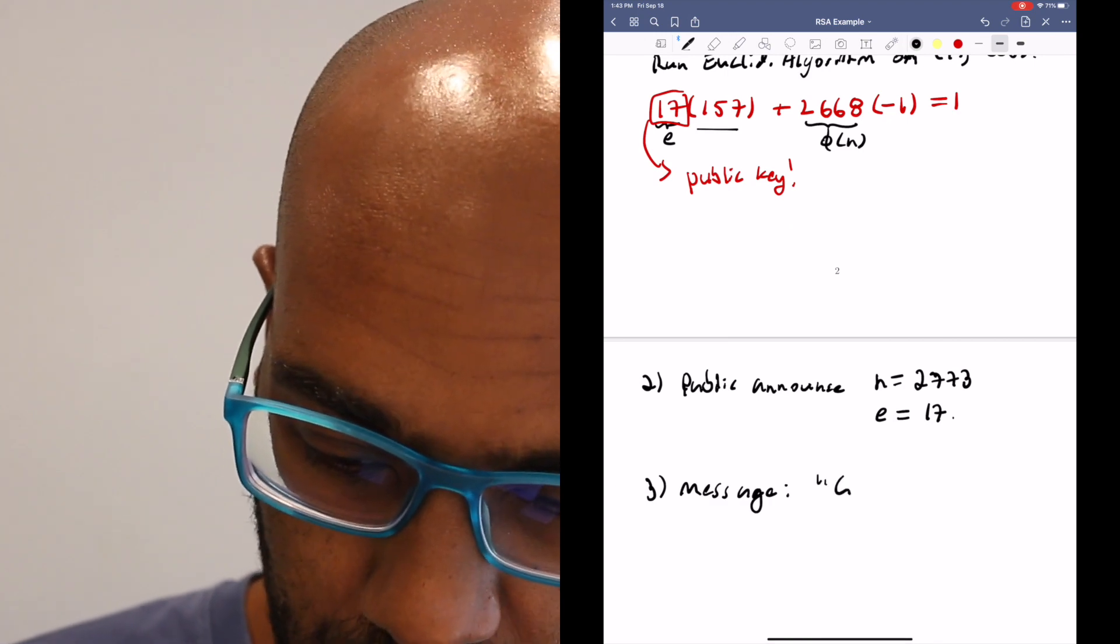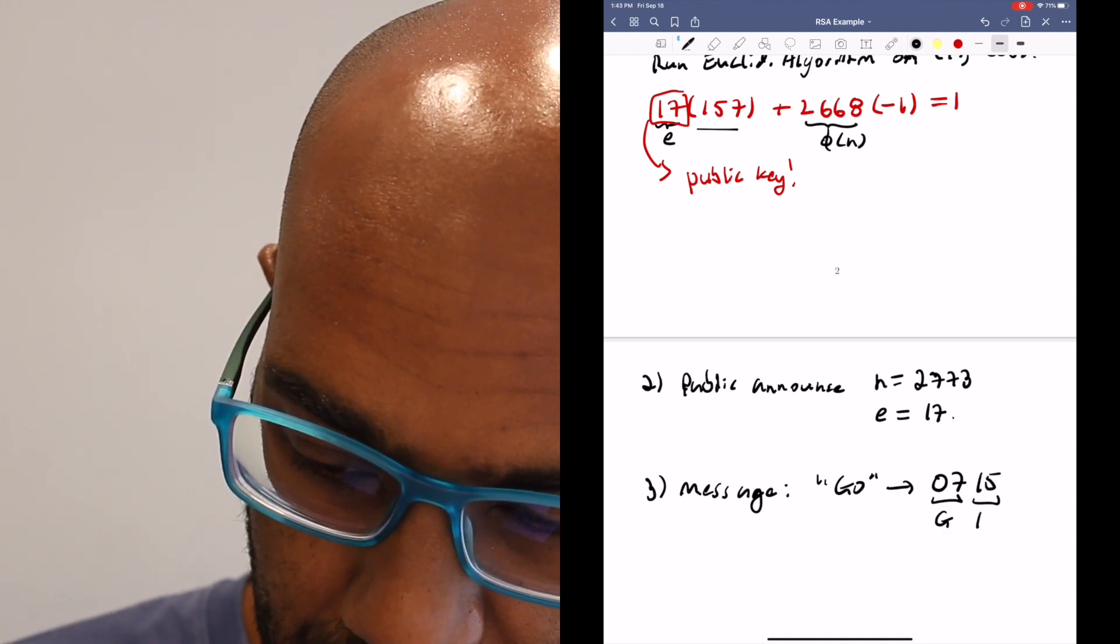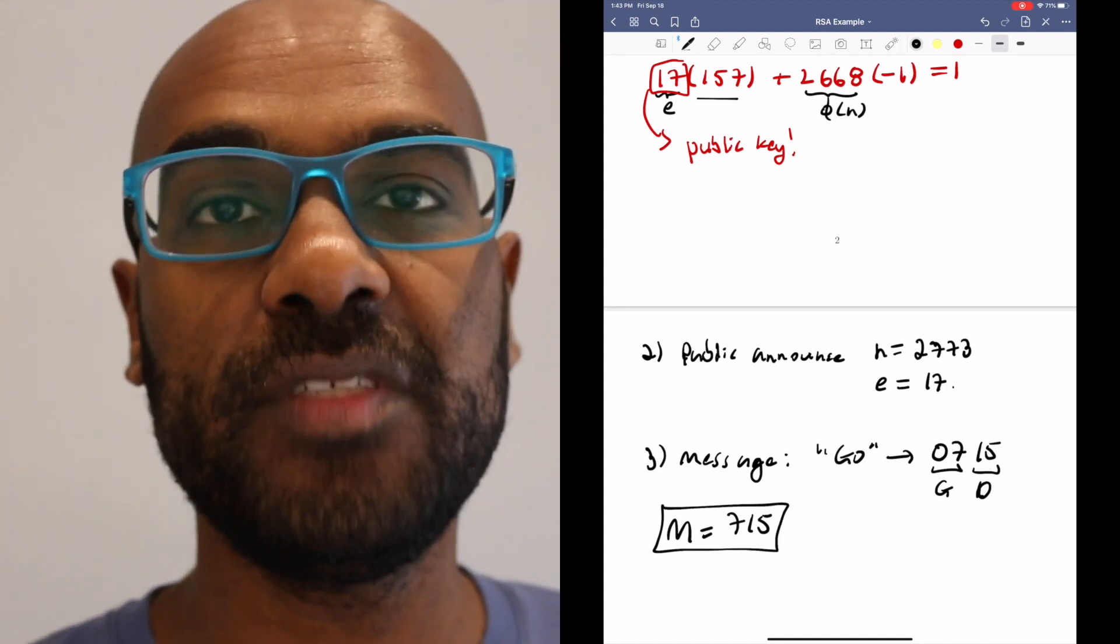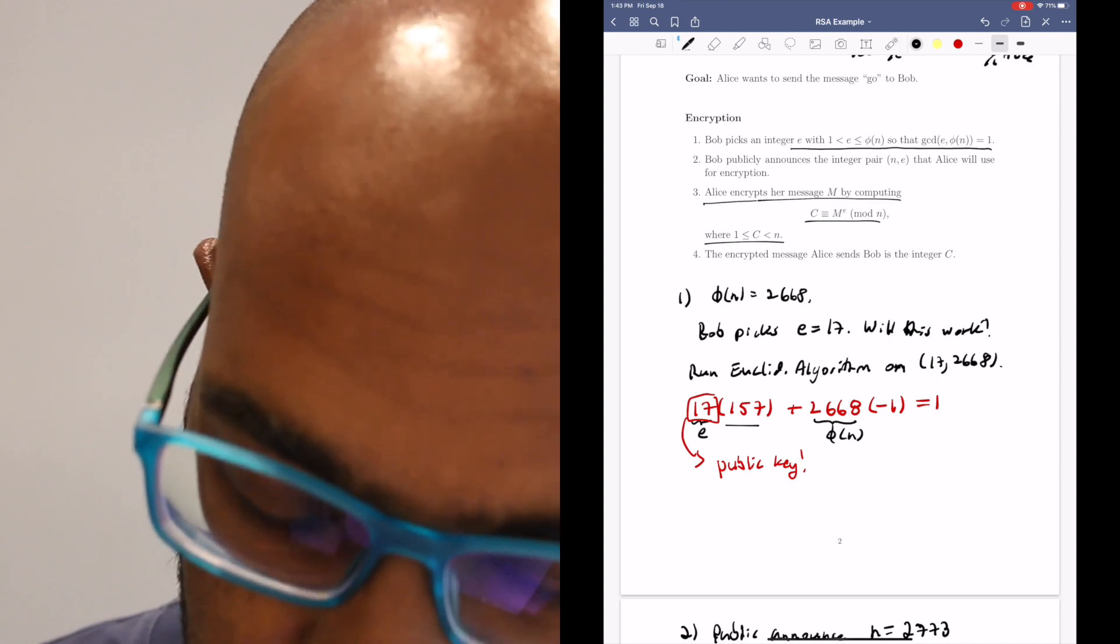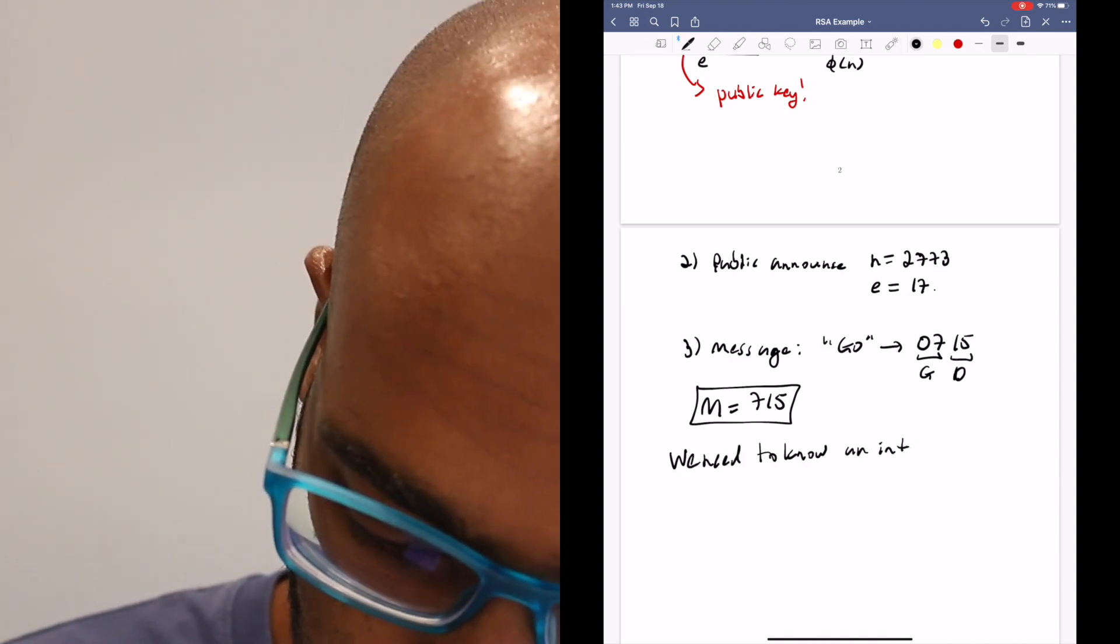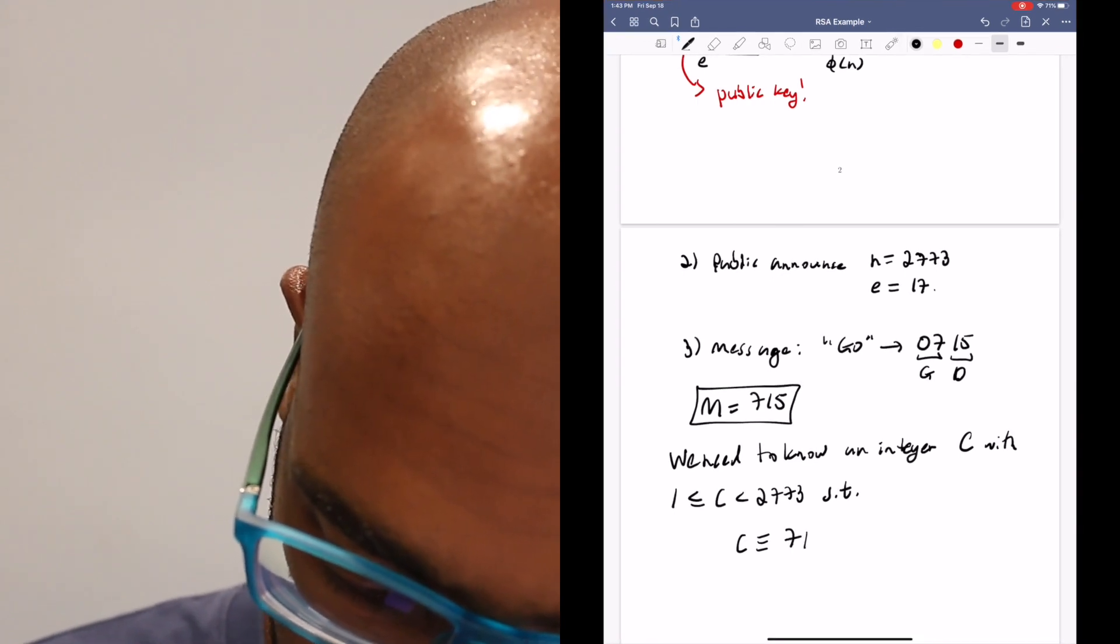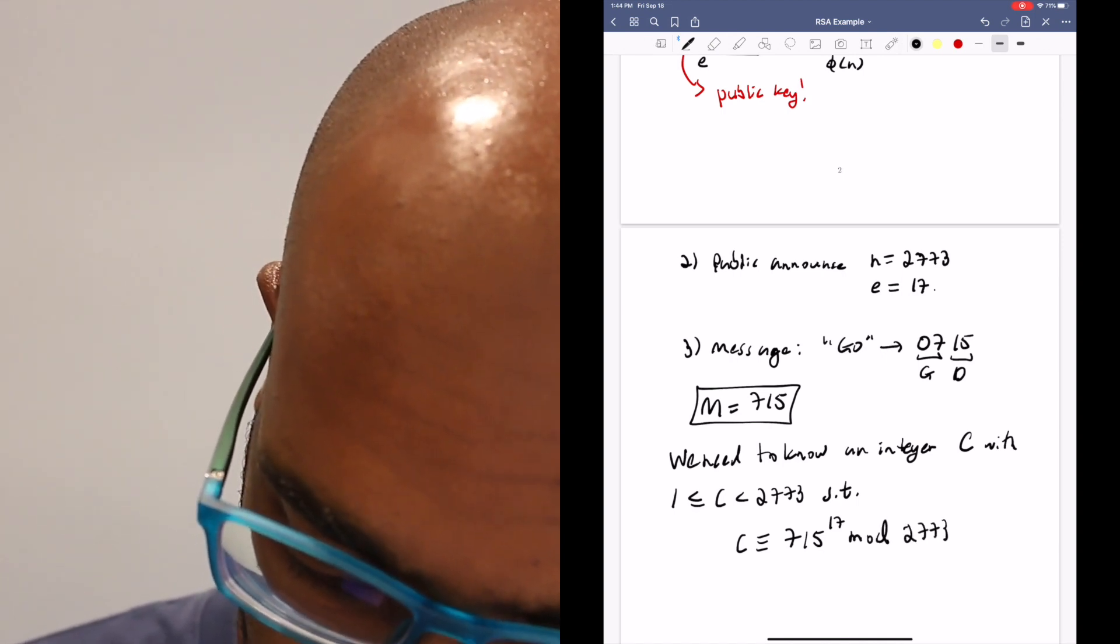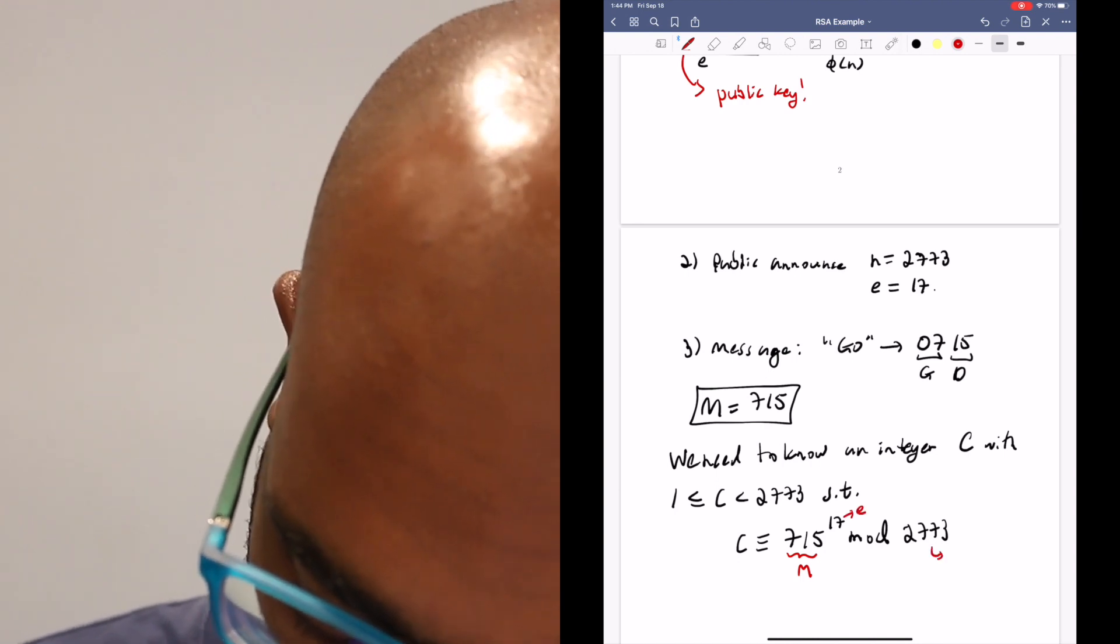The message was 'go'. G is the seventh letter of the alphabet, O is the 15th. So M, the message that Alice wants to send, is 715. According to our instructions, we want to compute 715 to the E mod N. We need to know an integer C with C being between 1 and N so that C is congruent to M to the E, which is 17, modulo N, 2773. I want to emphasize this thing here is our message M, this is our encryption key E, and this is N.